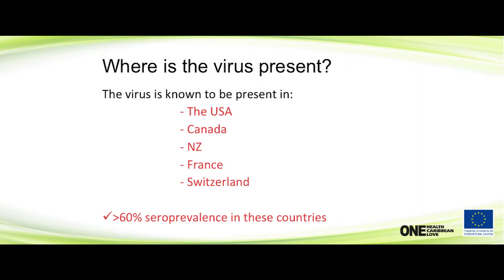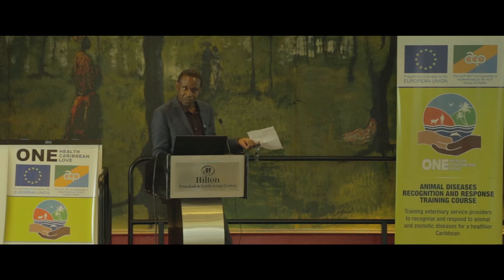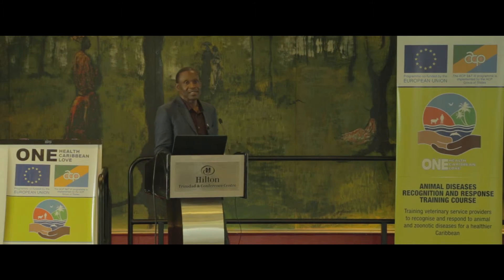As for where the virus is present: if you go on the OIE website, not many countries report that they have it — if you don't look for it, you probably won't find it. In the USA, it is thought that 60% of goat herds are infected. Canada maybe has fewer infected herds. New Zealand claims they have it. France and Switzerland have it mainly in dairy animals. On average, about 60% of animals may be seropositive, so if you're importing animals from these countries, you have to be aware of this disease.